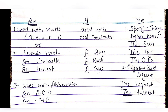'An' is also used with abbreviations where the first letter sounds like a vowel, such as 'an MP.' 'A' is used with the rest of the consonant sounds, like 'a boy' or 'a book.' 'The' is used with specific or universal nouns, like 'the sun.' 'The' is also used with adjectives in the third degree — the highest, the tallest.